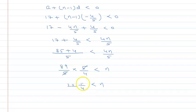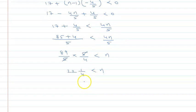This gives us 89/4 is less than n, so n will be greater than 22 and 1/4.